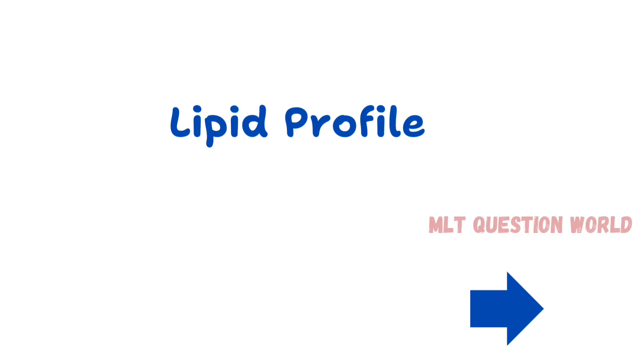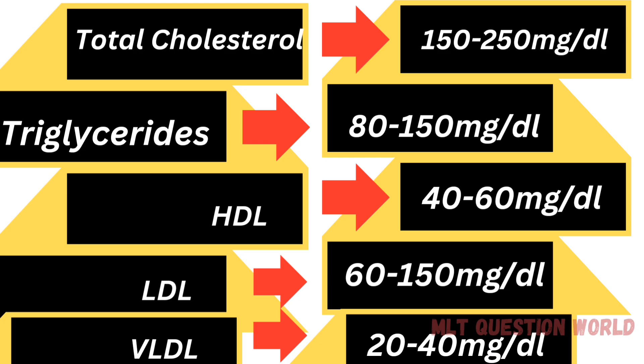Then comes lipid profile, which includes cholesterol, triglycerides, HDL, LDL, and VLDL. Total cholesterol is 150 to 250 milligram per deciliter. Triglycerides: 80 to 150 milligram per deciliter. HDL (high density lipoprotein): 40 to 60 milligram per deciliter. LDL (low density lipoprotein): 60 to 150 milligram per deciliter. VLDL (very low density lipoprotein): 20 to 40 milligram per deciliter.